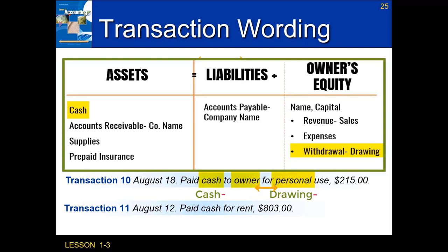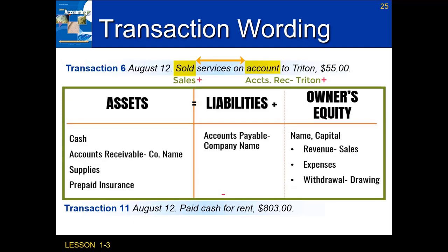The final transaction eleven on August 12th: paid cash for rent. My first keyword is 'cash,' matching the cash account. My next keyword is 'rent,' which is a type of expense. Paying cash decreases it, and expenses also always decrease. We have a minus on the left side of the accounting equation and a minus on the right side.